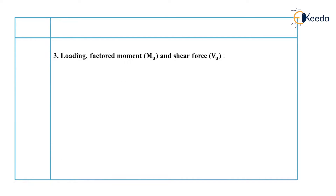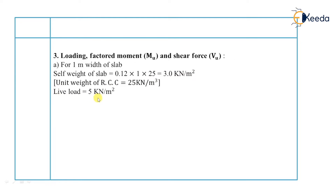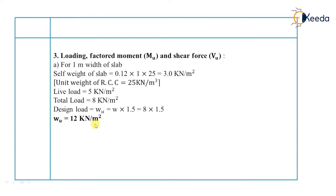Our third step is to find out the loading, considering 1 meter width of slab. Self-weight of slab equals volume into density: B × D × 25 kN/m³. With overall depth of 0.12 m, self-weight equals 3 kN per meter square. Live load is given as 5 kN per meter square. Total load equals 5 plus 3 equals 8 kN/m². Design load equals 8 into 1.5 equals 12 kN per meter square.